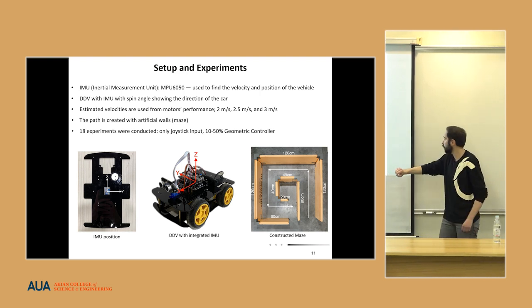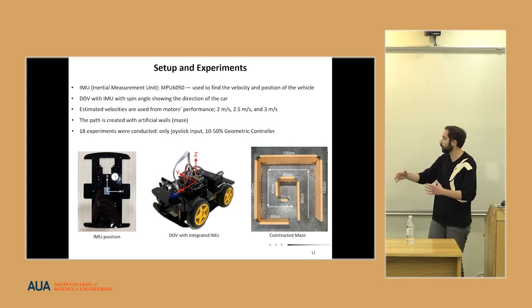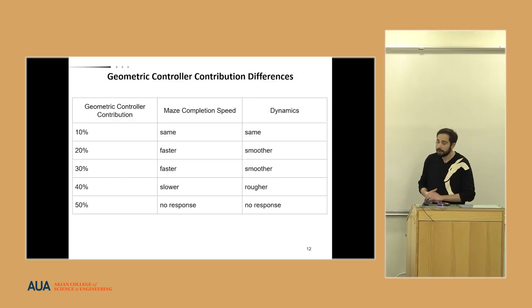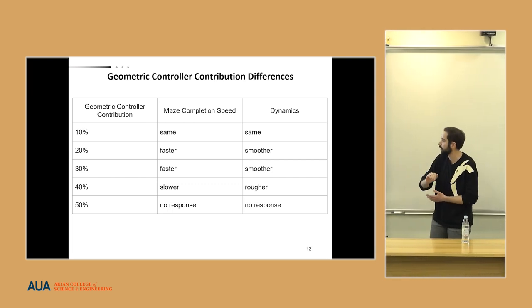The maze was taken from the literature and scaled down to the proportions of our vehicle. Talking about the controller distribution differences and how it has an effect on our car: